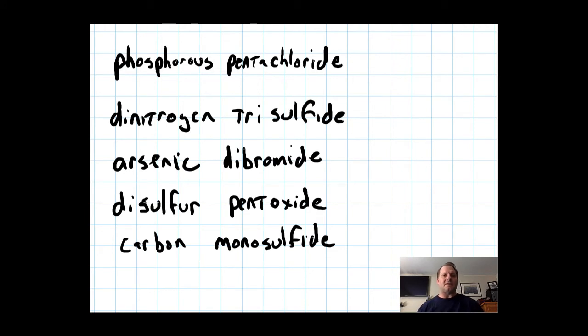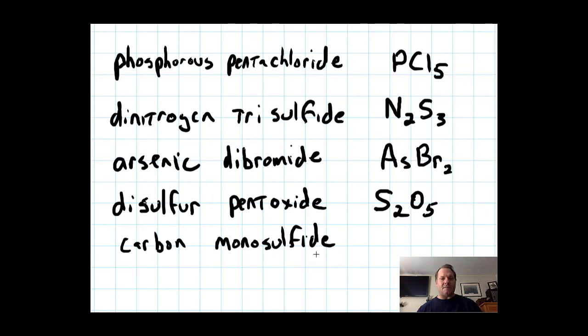So let's come up with some formulas based on these names. Phosphorus pentachloride. The kids have one phosphorus and five chlorides. Dinitrogen trisulfide. Dinitrogen would apply two nitrogens. Trisulfide. Trisulfide. Three sulfurs. Arsenic dibromide. One arsenic and two bromines. I don't think that would work. I don't think that would work, but hey, neither would this. Disulfur pentoxide. Well, it's telling me disulfur, pentoxide, pent is five, carbon monosulfide. Hmm. Well, one thing we can be sure, this is so simple a child could do it.